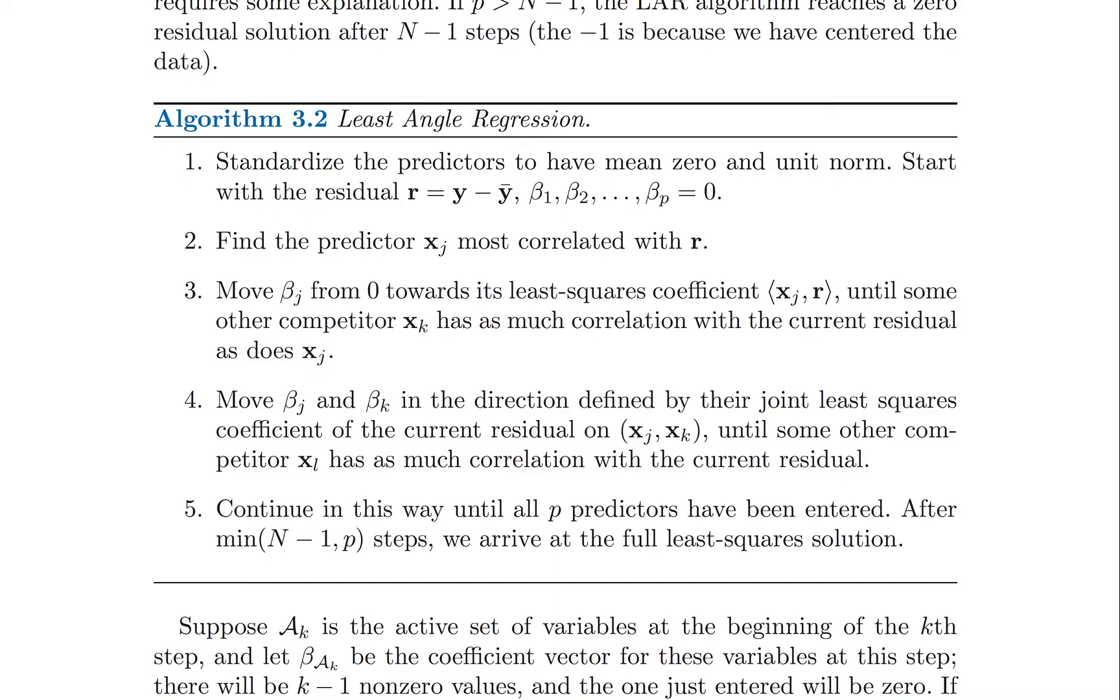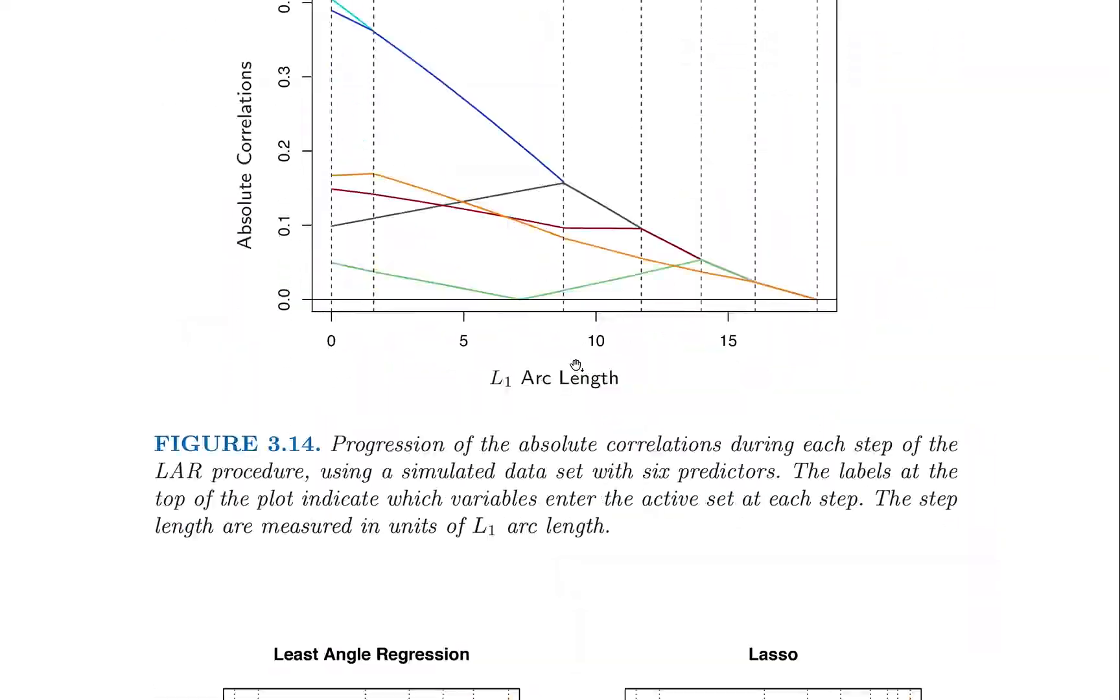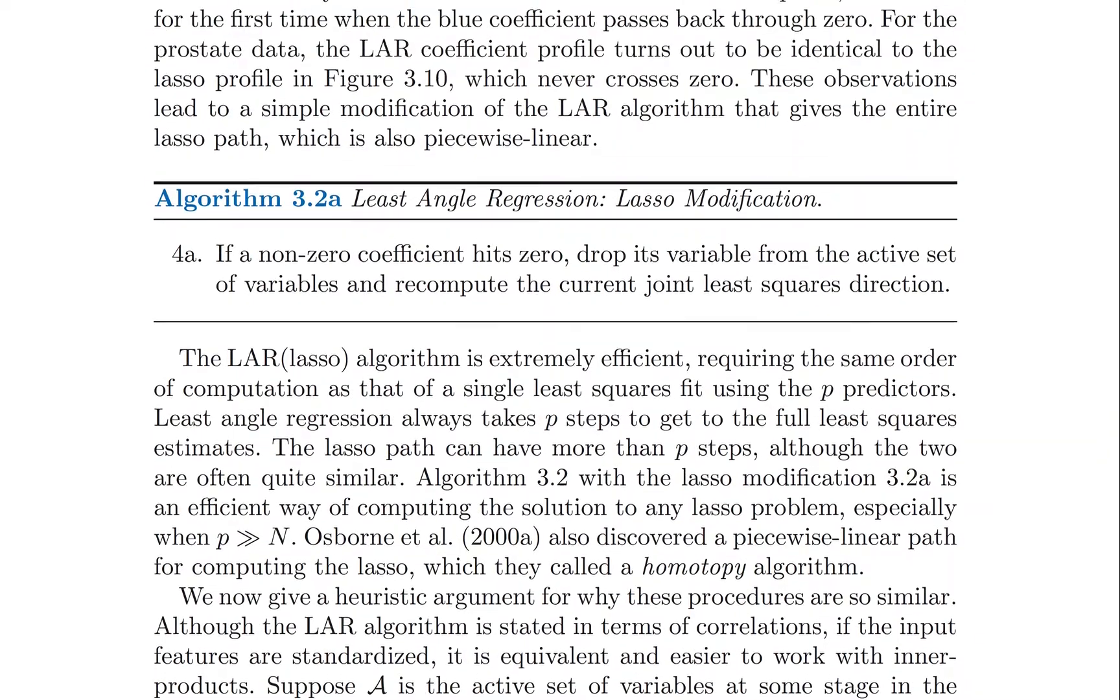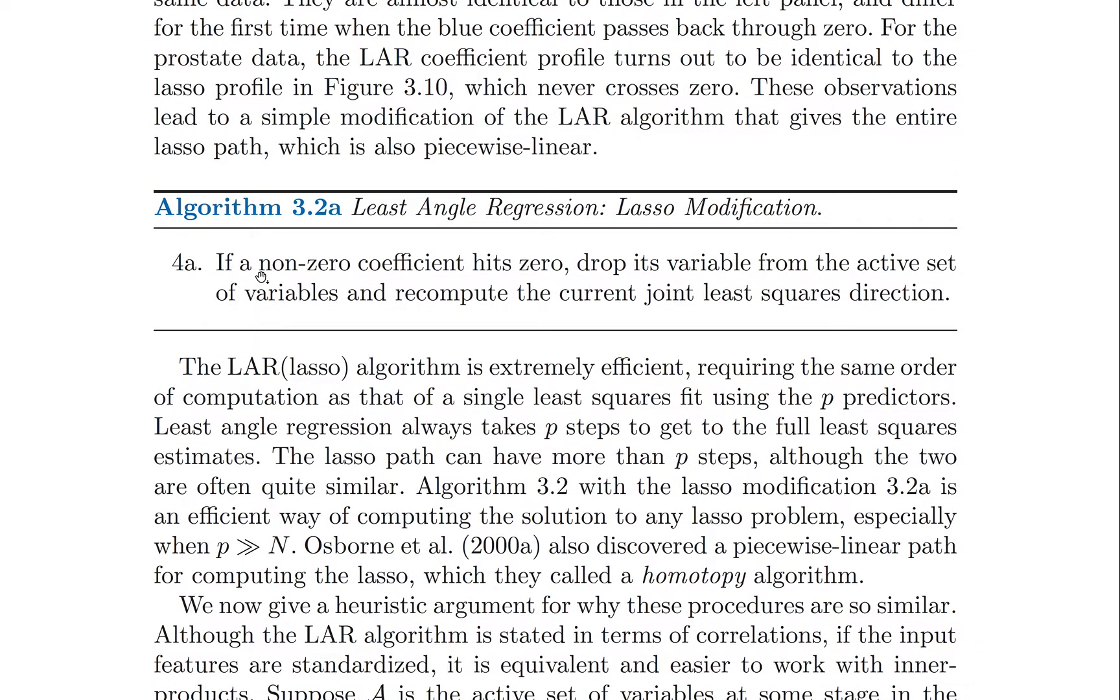Now there's one addition to make, which turns the least angle regression into the lasso algorithm. I'll scroll down a few pages here in the book. It's algorithm 3.2a. If in this process a non-zero coefficient hits zero, we drop its variable from the list of variables that we're using and recompute and begin from there.